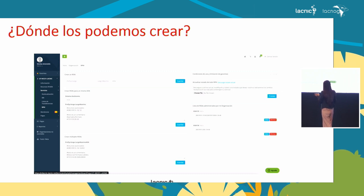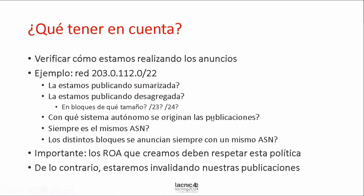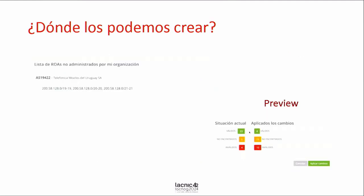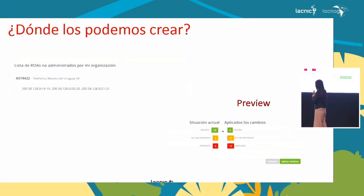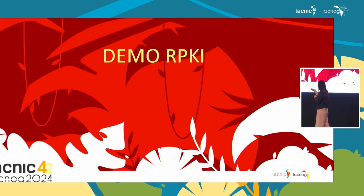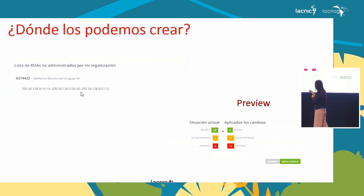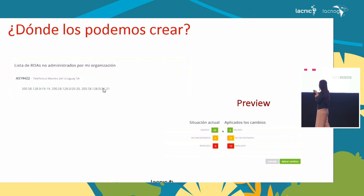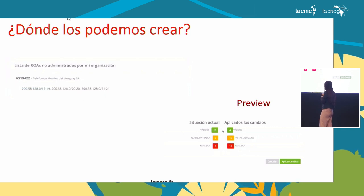Thanks to that policy approval, we can now manage resources created by other organizations when we are the final entity using IPv6 addressing that our ISP sent us. These are resources not received directly from LACNIC but subassigned to us. Thanks to this policy, we can manage them and generate ROAs to fulfill the RPKI part. In the Milaknik system on the right side, you can visualize the subassigned resources. Here is an example—this appears as a rule not administered by my organization—those are the subassigned objects.